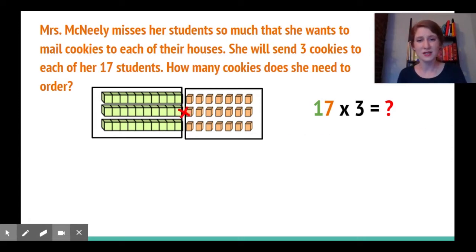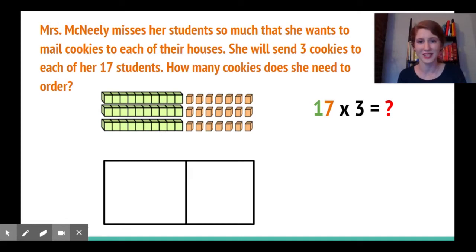My first step is to draw a box that has a tens place and a ones place. Then I'll break 17 into expanded form. I bet you can do that right: 10 plus 7. I'm multiplying those by 3 so I'll put 3 on the side.